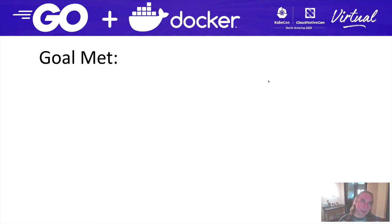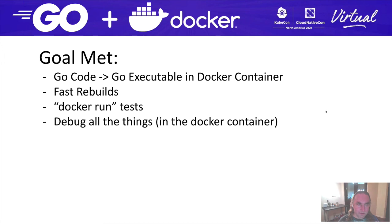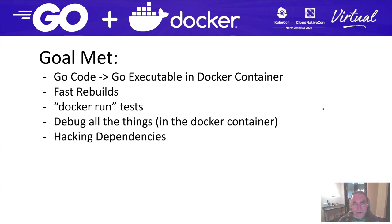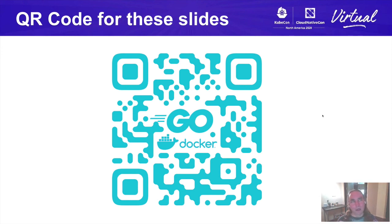We've now met all our goals: Go code to a Go executable in a Docker container with fast rebuilds; Docker run tests that are easy and straightforward; debugging of both tests and the executable that's easy and straightforward; a clear way to hack dependencies that's idiomatic for both Go and Docker; and idioms preserved across both environments without doing anything bizarre. Thank you very much for attending. The QR code links to these slides in Google Slides — please feel free to borrow from them.